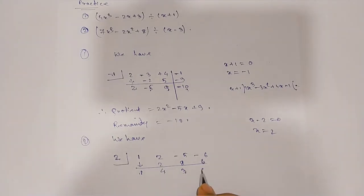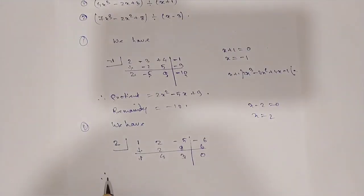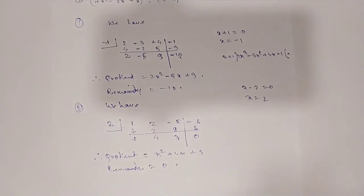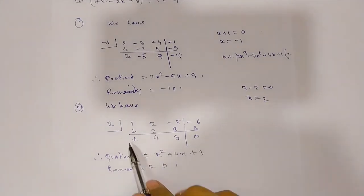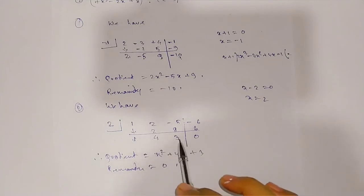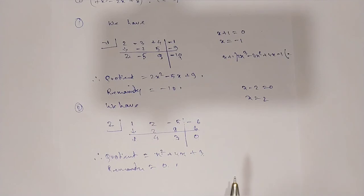The quotient is x² plus 4x plus 3, and the remainder is 0. I hope it is clear. Thank you.